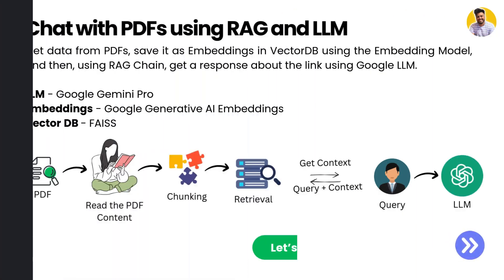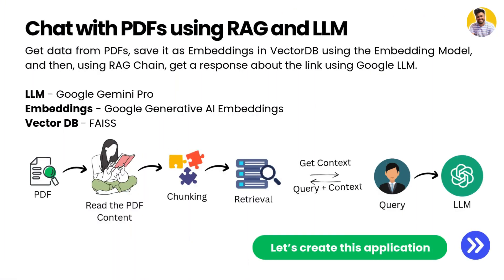Now let's move to our second project: 'Chat with PDF'. Here we upload a PDF to the app, which reads and extracts the text, saves it into the FAISS vector DB using the embedding model, and then uses the RAG chain to get a response from the vector DB based on our query, passing it to the LLM for the final response. The key difference from the URL project is that here we process a PDF instead of a URL.